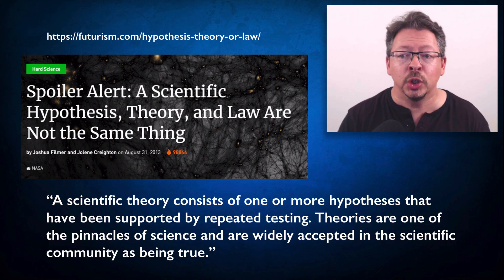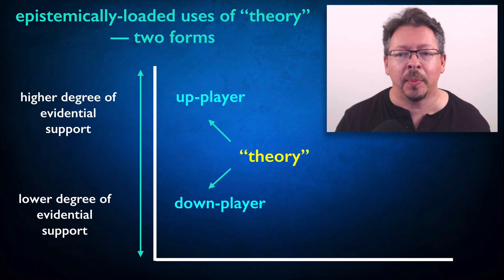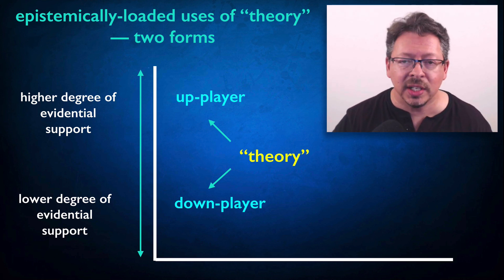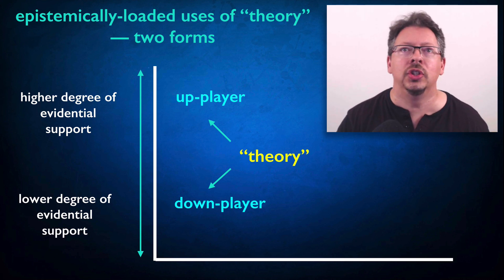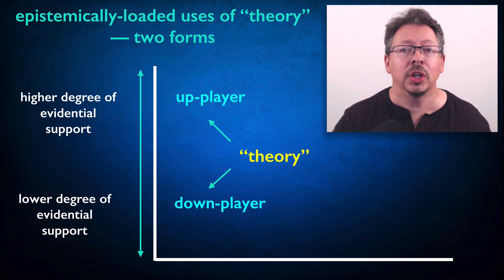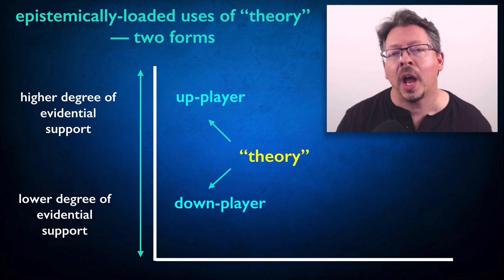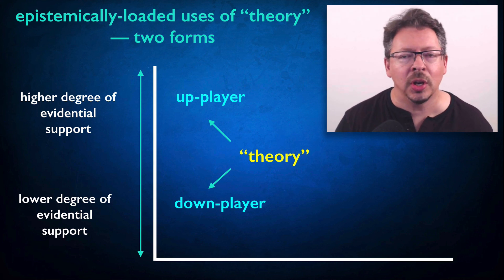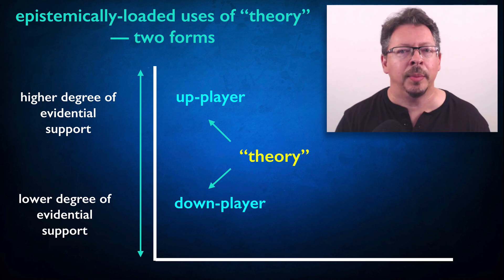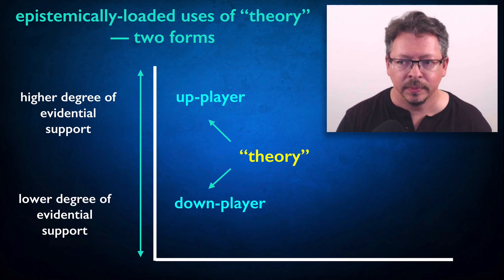The only point I want to make in this video is to show that people do actually use the term theory in this way, and to substantiate that we have these two types of epistemically loaded usage of theory in circulation. There's the downplaying version expressed in phrases like 'it's just a theory,' and there's an up-playing version often used by pro-science advocates distinguishing common usage — which is downplaying — from what they regard as properly scientific usage, which is up-playing. As we'll see, I think this whole idea of trying to legislate a single correct use of these terms is misguided. Scientists actually use these terms in all these different ways. But there's a more serious problem with these epistemically loaded definitions — a problem that helps us see why we need an epistemically neutral definition. And that's what we're going to talk about in the next video.